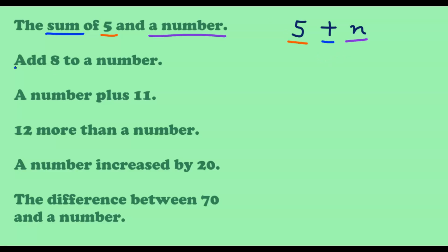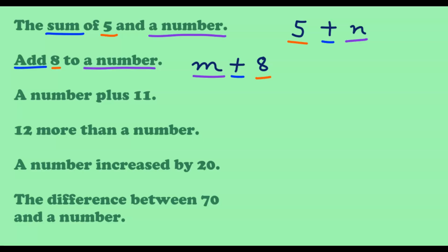Next, we have 'add eight to a number.' We have to add, so we need the plus sign. We don't know what the number is, so we use a variable — let's use m. So we get m plus eight. Next, we have 'a number plus 11.' Translating this, we use p to represent the number, giving us p plus 11.